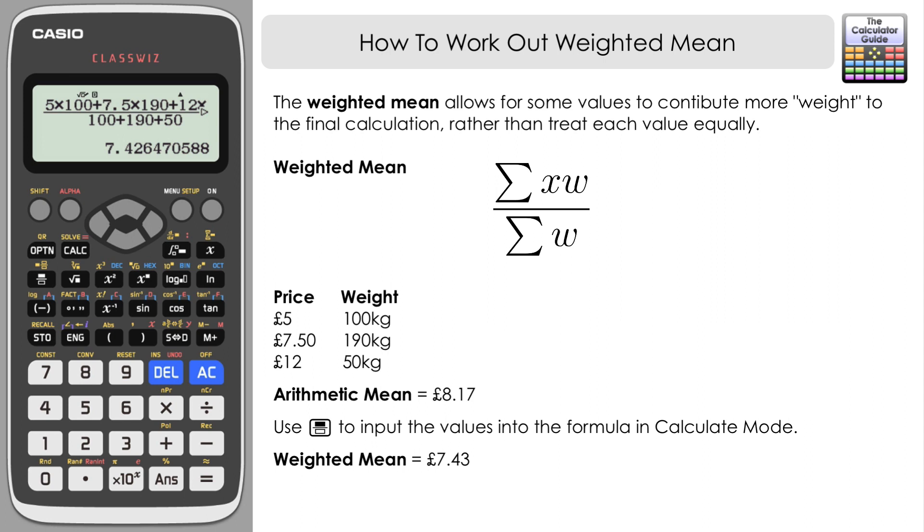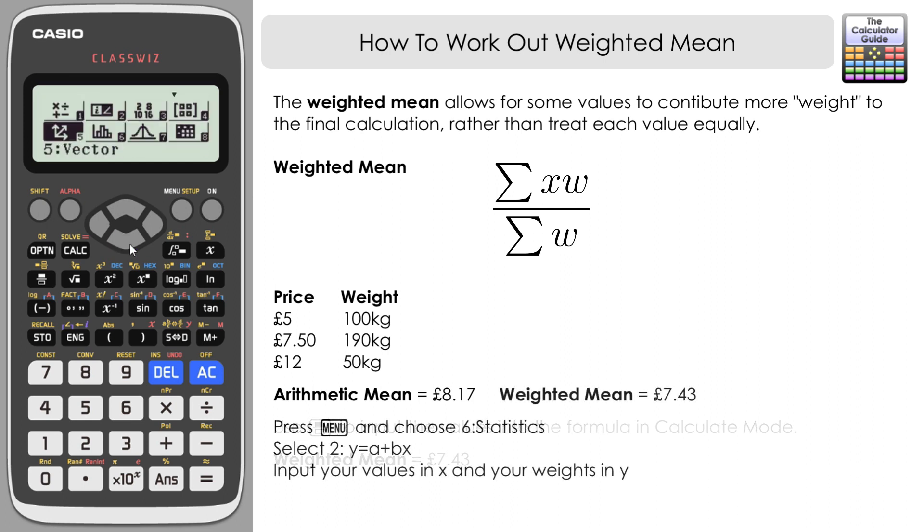Now I did tell you there's going to be a second way of doing this, and this is a little bit of a hack that we can do by using statistics mode. If you go to menu and then 6-4 statistics, we're going to select option 2 here, y equals a plus bx, and we can see that we've got two columns set up.